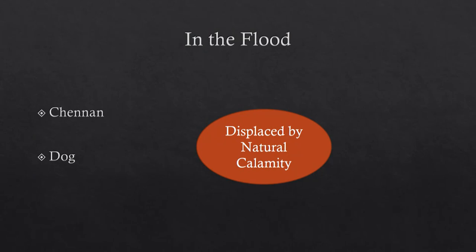Looking at the short story 'In the Flood,' what exactly is the causation? The causation is natural calamity. Chenin is displaced from his hut or his home space by flooding, monsoons, and heavy rain. The same thing applies to his dog as well — the dog is displaced from the hut because of natural calamity, that is, the flood caused by heavy monsoon rains.